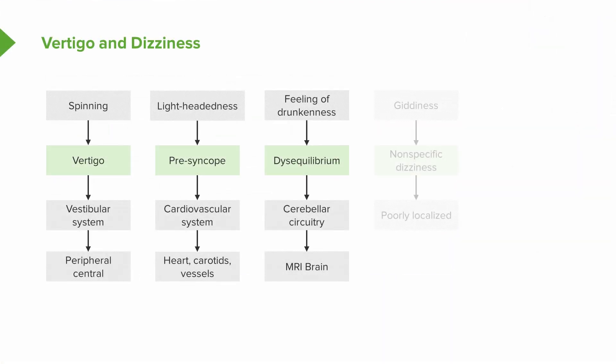The third category is disequilibrium — that drunkenness feeling. Patients describe this as being imbalanced or off balance, as being unsteady on their feet. Disequilibrium comes from a problem with the cerebellum or cerebellar circuitry, so imaging the cerebellum and interrogating that circuitry is often our initial step in the diagnostic approach to disequilibrium.